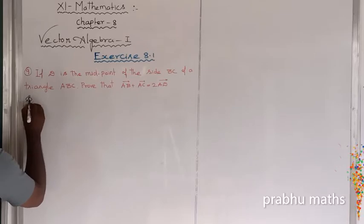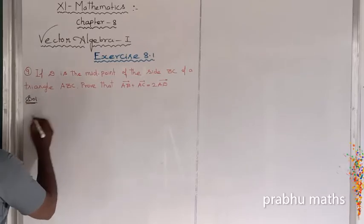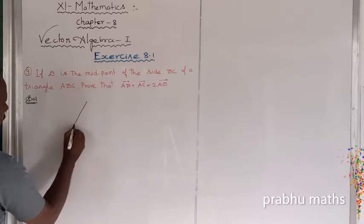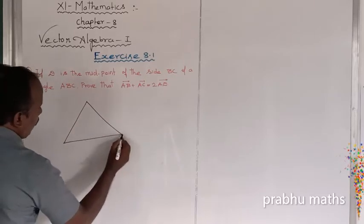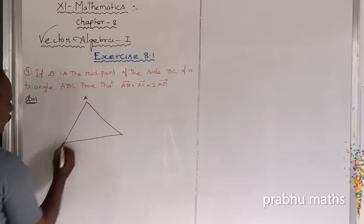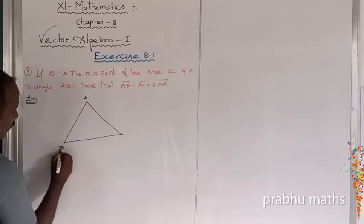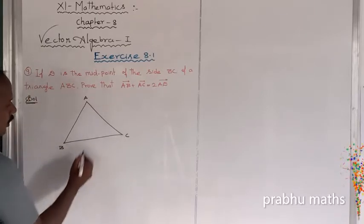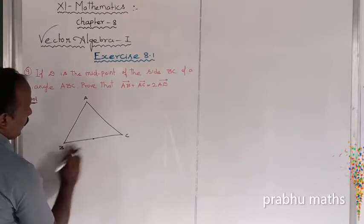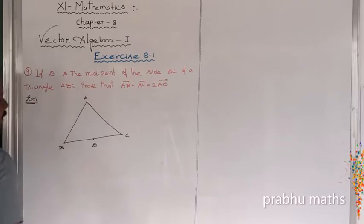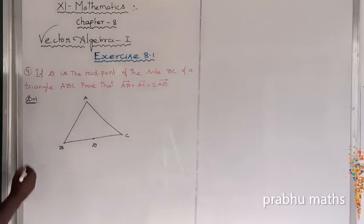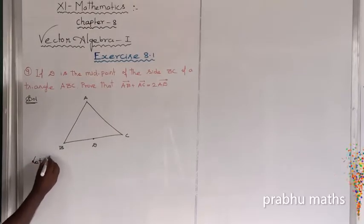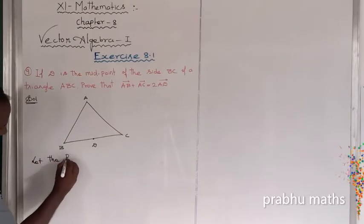Solution: Let us draw the diagram. In triangle ABC, the midpoint of BC is D.